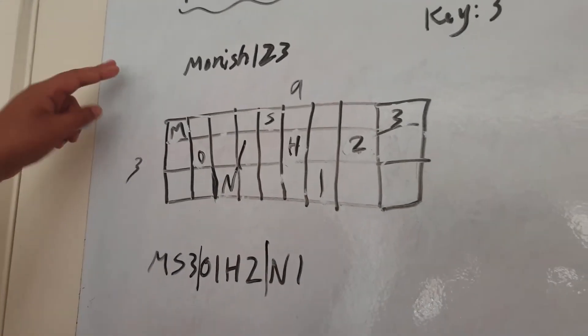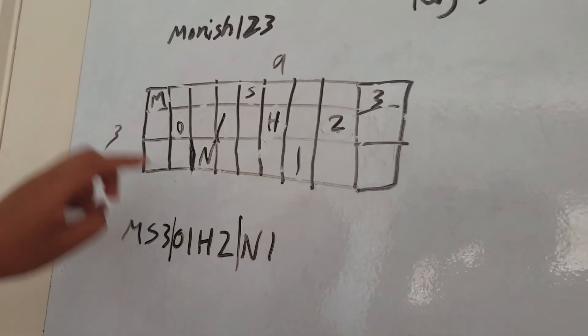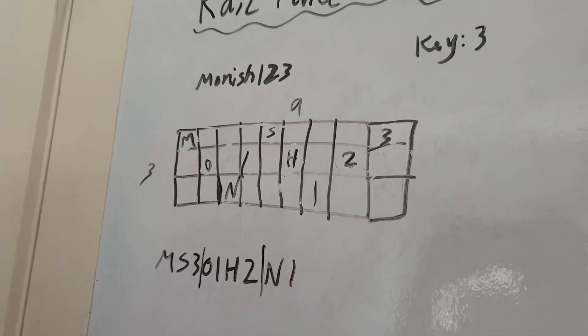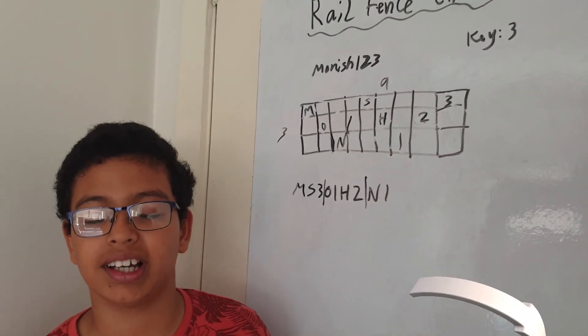And then you just read diagonally up and down. So Monish one, two, three. And that's basically how a Rail Fence Cipher works.